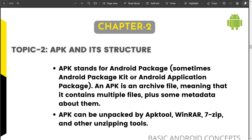Welcome. We're going to discuss what an APK is and the structure of an APK when we unpack it. Basically, APK stands for Android Package or Android Package Kit — it's essentially a zip file which contains multiple files like classes, tags, assets, resources, and META-INF files. The APK can generally be unpacked using tools like APK Tool, WinRAR, or any other unzipping tool.